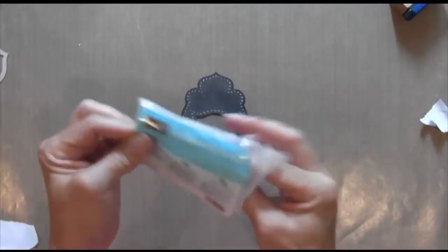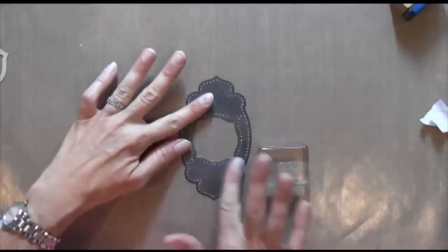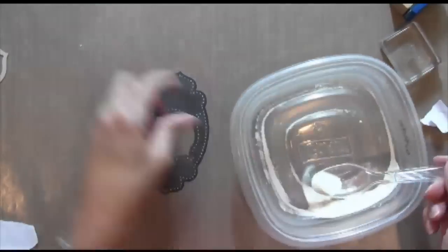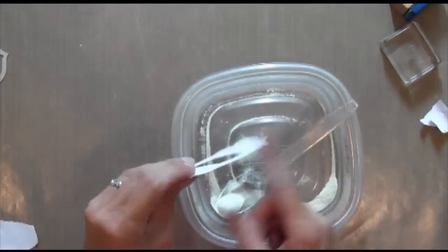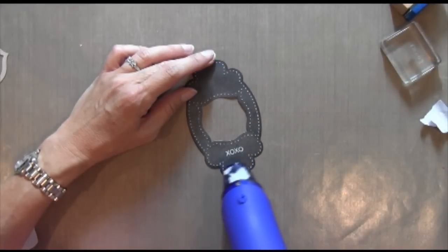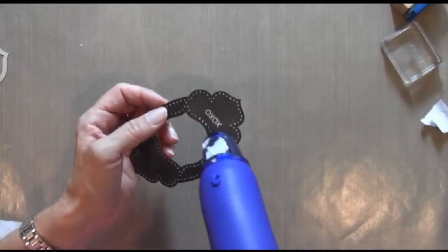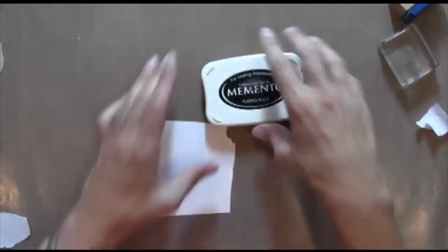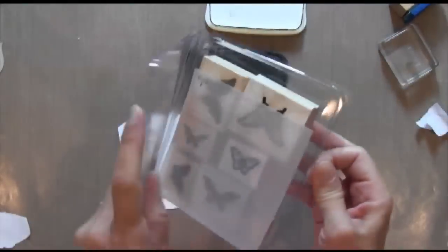This is another set by Hero Arts. It's just got a ton of different sentiments in it. And that's an embossing buddy which applies some like little powdery substance so that it doesn't have so much static on it. And so this embossing powder doesn't cling where you don't want it to cling. And it was out of stock at Stampin' Up for a really long time and now it's back in stock so you can order it. I basically use it pretty much any time I do white embossing on black paper.